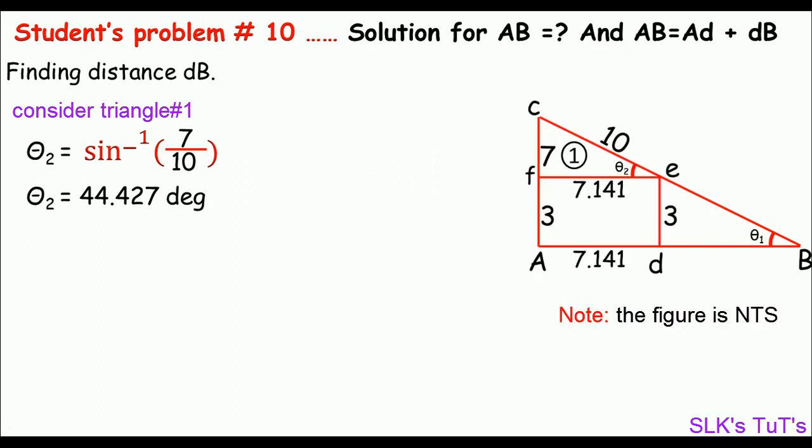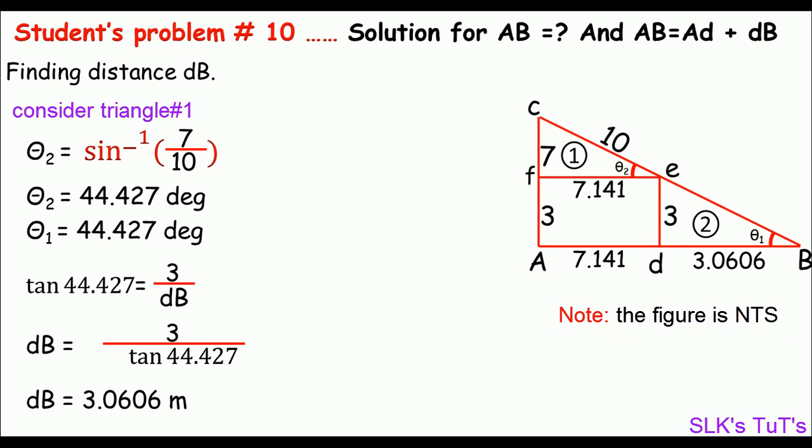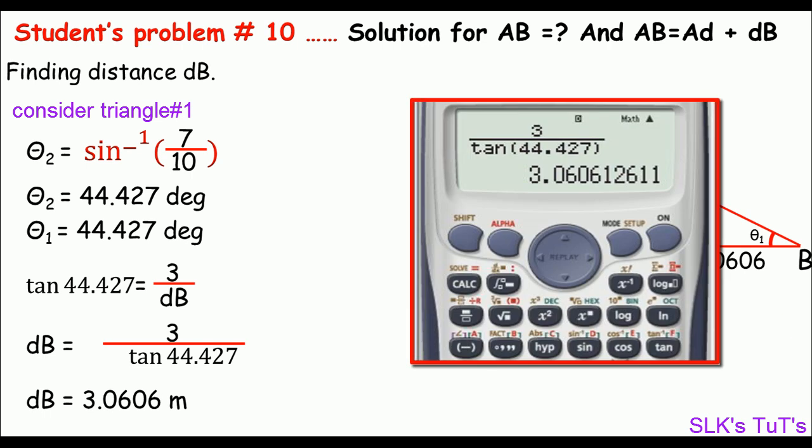From the figure, theta 2 equals theta 1, so using triangle 2, we can calculate DB. We take tangent of theta 1. Tangent is the perpendicular, which is 3 meters, divided by the base, which is DB. We can rearrange the ratio for DB, so we get DB is 3.0606 meters.